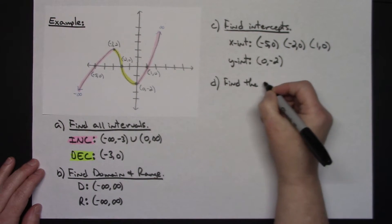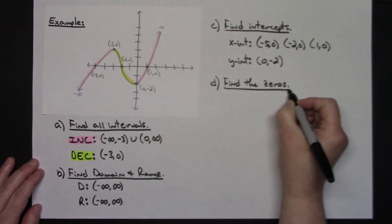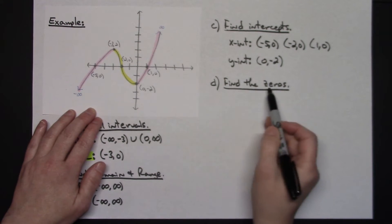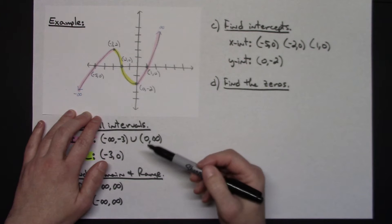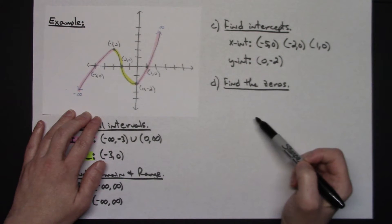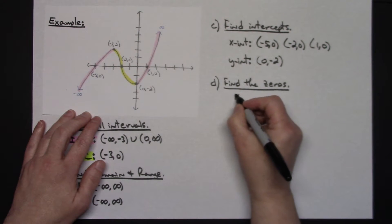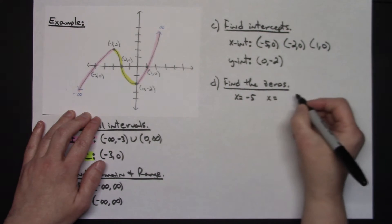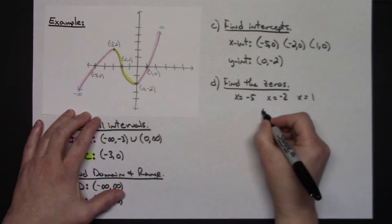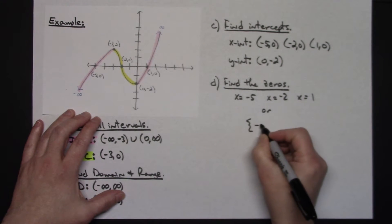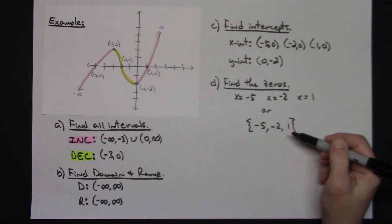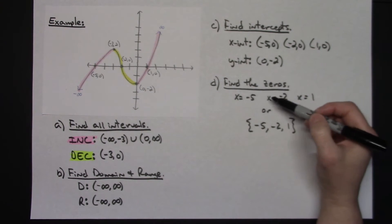If it says find the zeros of the function — on the graph they're located in the exact same spot as your x-intercepts, so those three points are your x-intercepts and also your zeros, which can also be the real solutions to the function. However, because it's asking for zeros and not intercepts, list them individually: x equals negative five, x equals negative two, and x equals one. You can also use set notation with set brackets listing negative five, negative two, and one.